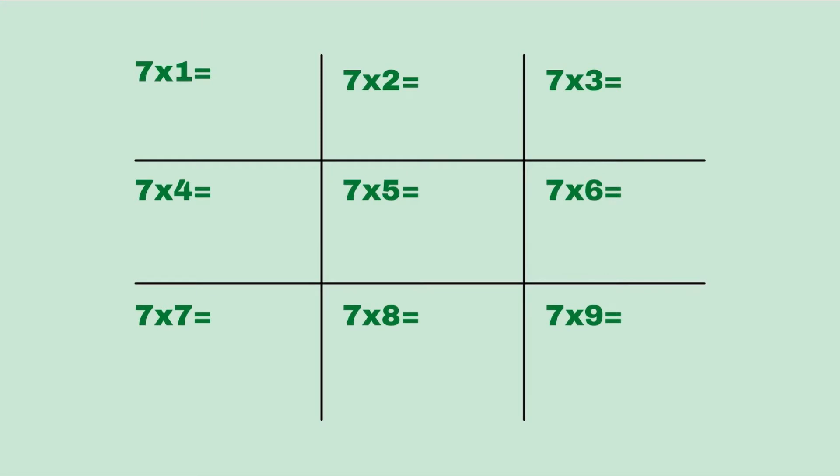First we will start by putting the numbers in the ones place: one, two, three, four, five, six, seven, eight, nine. Now let's do the numbers in the tens place, this time we will do it horizontally.